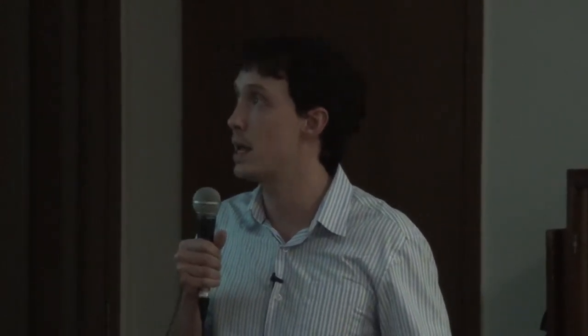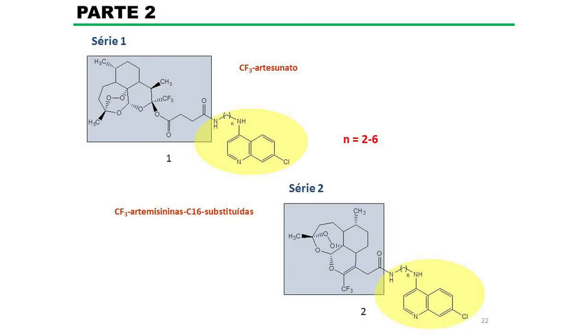Inicialmente seria feita a síntese desses derivados; em seguida, eles seriam testados in vitro para verificar a capacidade de inibir o crescimento do parasita; e a partir disso seria feita uma seleção para alguns derivados serem testados in vivo, para avaliar a capacidade de combater a infecção e evitar a recrudescência da parasitemia, que é um dos principais problemas de se utilizar um derivado da artemisinina. Foram propostas duas séries de moléculas: a primeira série contendo um grupo trifluorometil-artesunato ligado ao grupo quinolínico, e a segunda série contendo uma artemisinina fluorada modificada na posição 16 ligada ao grupo quinolínico, com variações no comprimento da cadeia carbônica entre os dois nitrogênios.